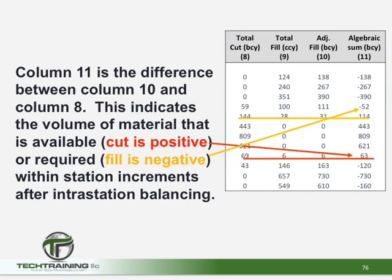Column 11 is the difference between column 10 and column 8. It indicates the volume of material that is available after balancing the cut and the fill at each adjacent station. Cut is going to be a positive because it's available material, while fill is going to be a negative because it is not available material. Therefore, the minus 138 at station 0+50 is stating that 138 bank cubic yards are required at those two adjacent stations. When we compact them, we will have 124 cubic yards, which is column 9 — the required compacted cubic yards.